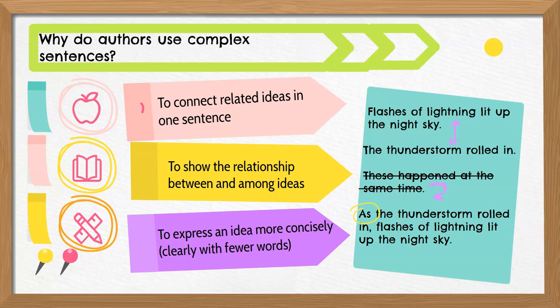So why do we use complex sentences? Why not just stick with simple sentences? Well, there are important reasons that we as writers choose to use them. First of all, we can join related ideas in one sentence. We do this to avoid short, choppy sentences that make us sound boring. Second of all, complex sentences show the relationship between ideas. Without the subordinating conjunctions, we wouldn't know how one idea is related to another.